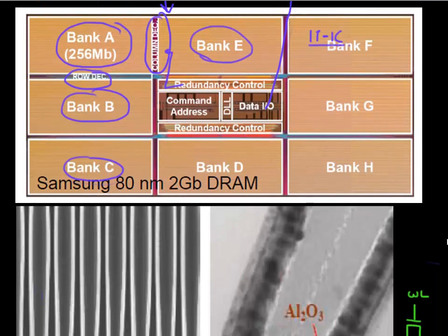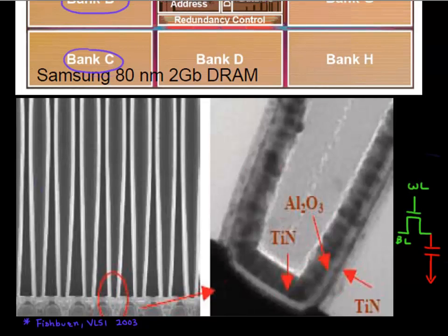If you take a cross-section, there's a very large chance you'll land on something which looks like this. It looks like either an antenna hanging in the sky or the horn of a deer. We were supposed to have a nice one-transistor, one-capacitor cell — so where is the transistor? If you look carefully, the transistor is located somewhere over here — this is your access transistor. And this antenna or set of horns hanging in the sky are actually the capacitor.